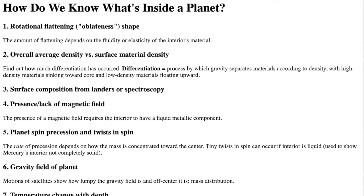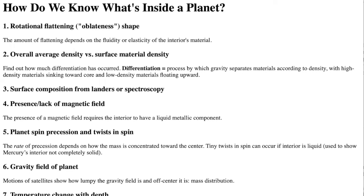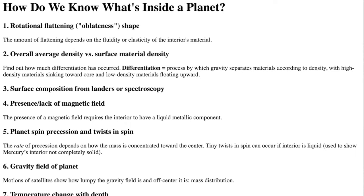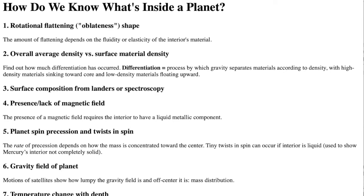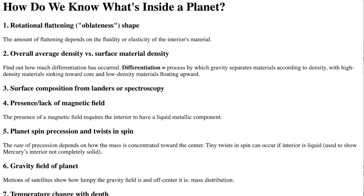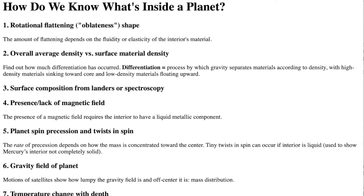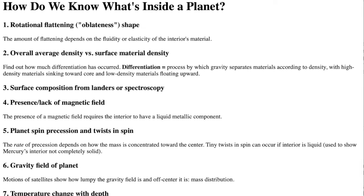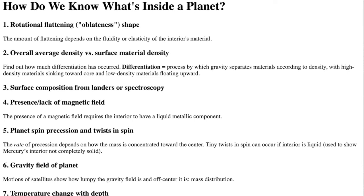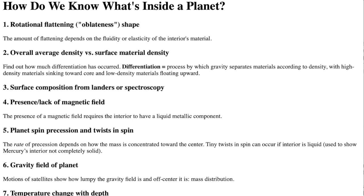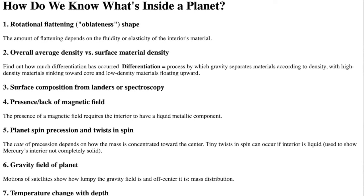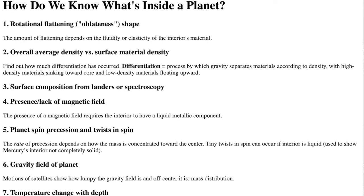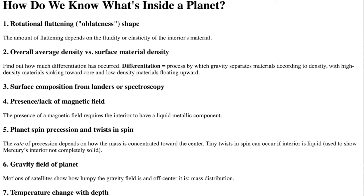By carefully observing the rotation of a planet, you can detect the precession wobbling of its rotation axis. The rate or speed of that precession depends on how much the mass is concentrated toward the center. The tiny twists in a terrestrial planet's spin can be used to determine if the core is solid or liquid.